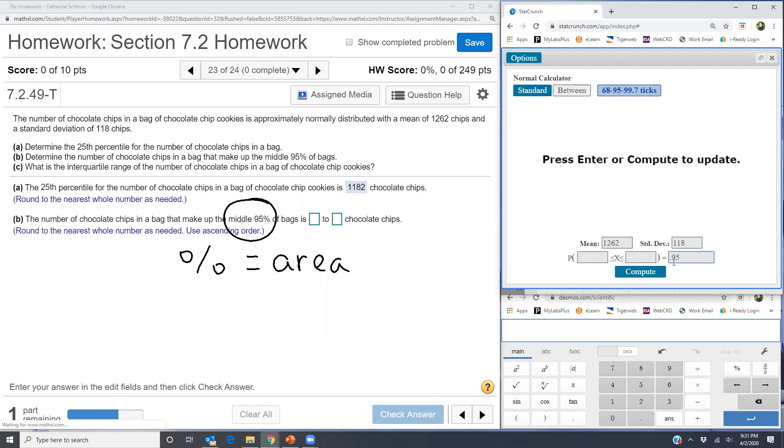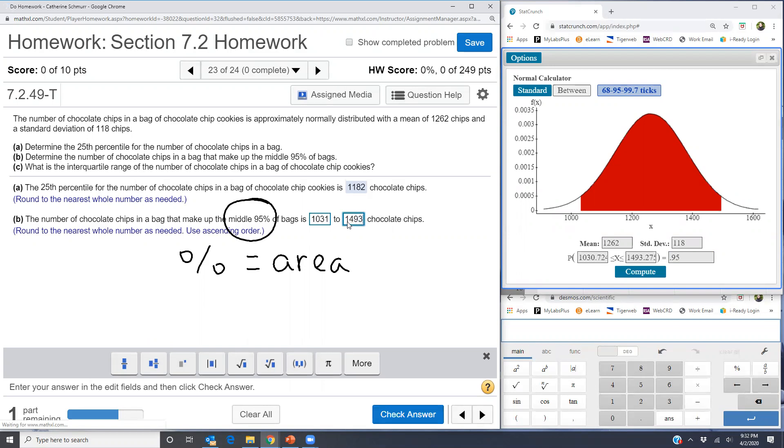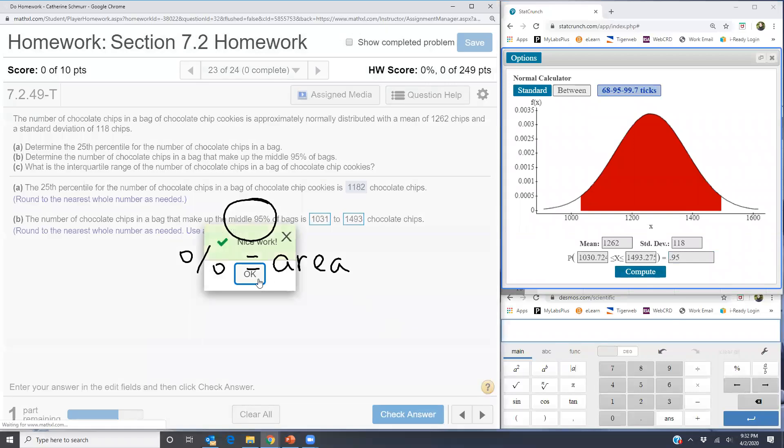And remember, area always goes in this box to the right of the equal sign in your normal calculator. When I compute, I get a lower bound and an upper bound for the number of chocolate chips. So I'm going to have 1031, because I need to round to the nearest whole number, and 1493 for the number of chocolate chips.